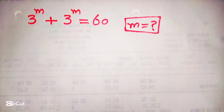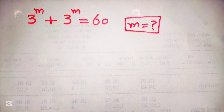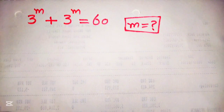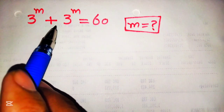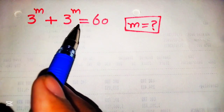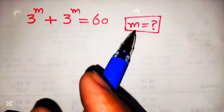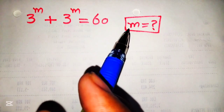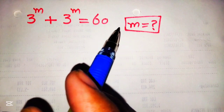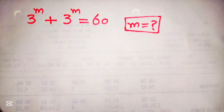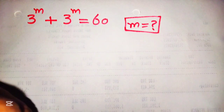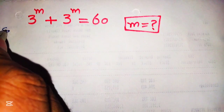Hello guys, welcome to my YouTube channel Along the Edge. Today we are going to solve a very nice exponential equation which is given as 3 raised to the power m plus 3 raised to the power m is equal to 60, and we have to find the value of m. We will also verify this solution in the end. So let's start the solution.